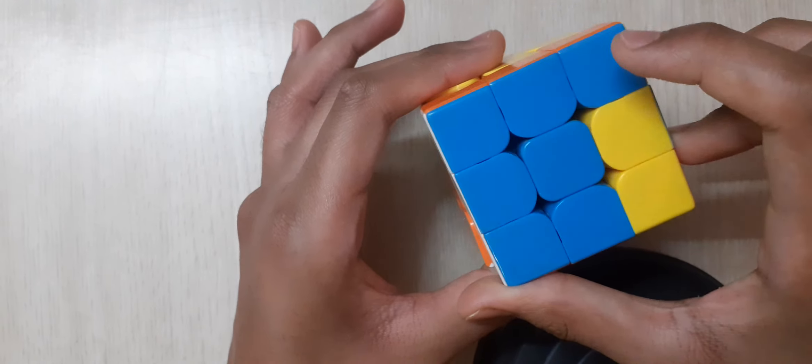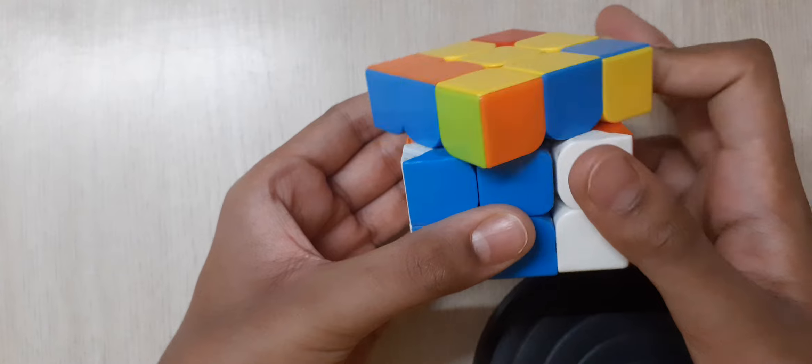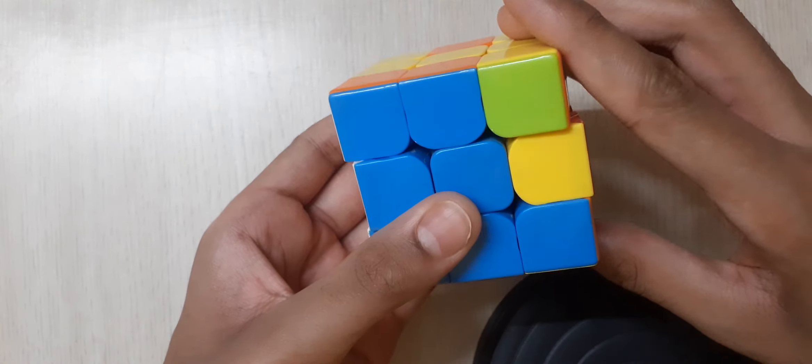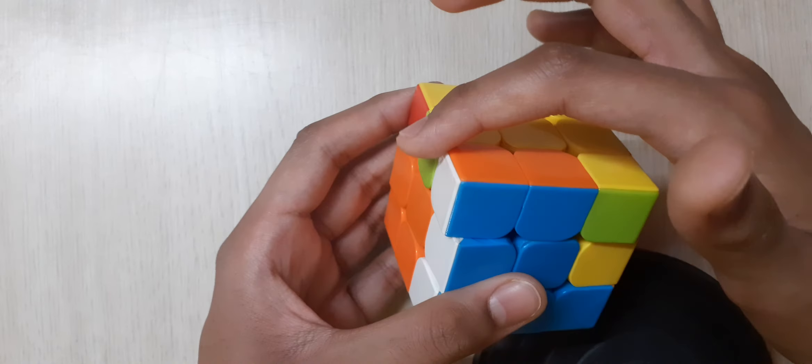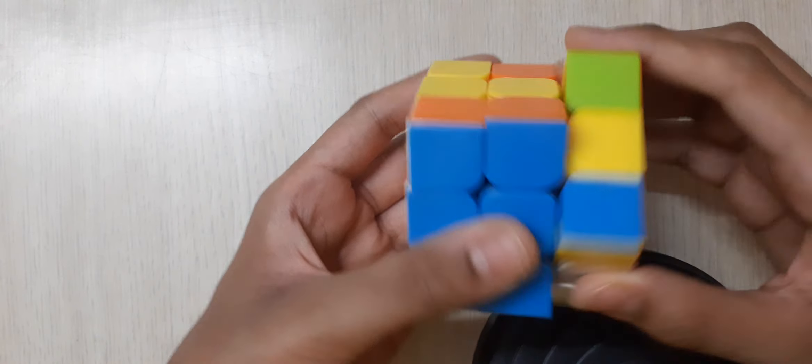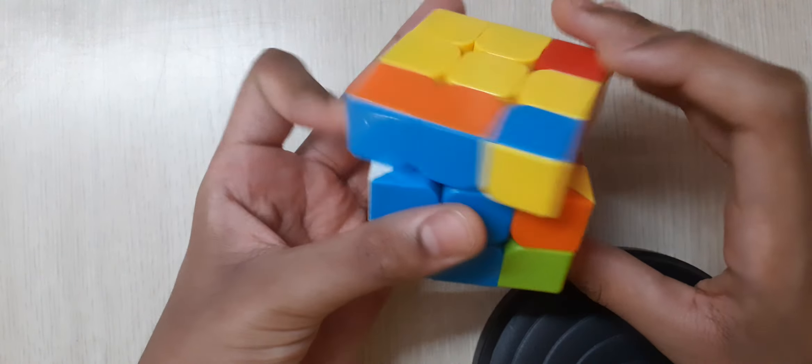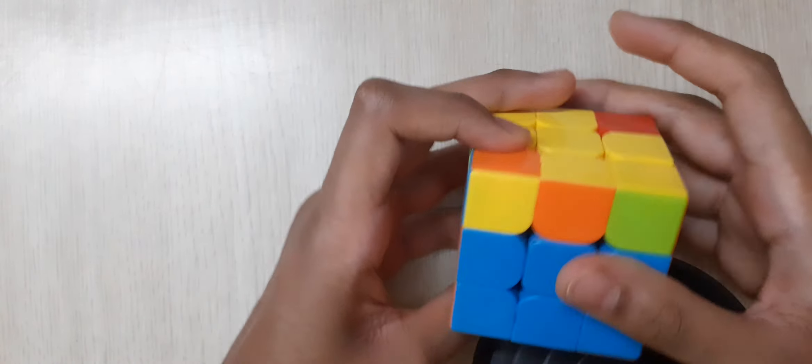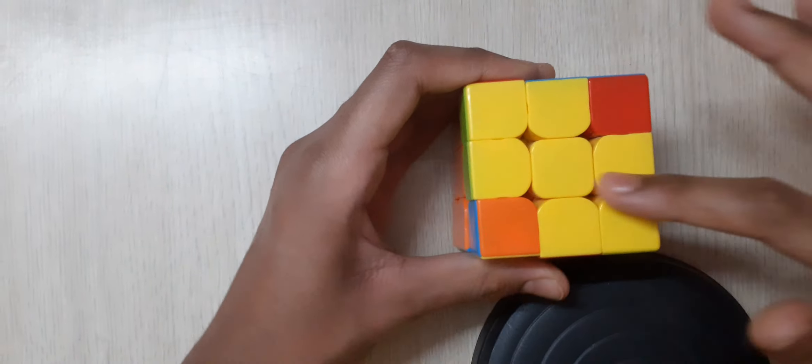Let's take it there. R, U, R' U', a straight line is there. Then do it again. R, U, R' U', and turn it back. Now there's a yellow cross out there.